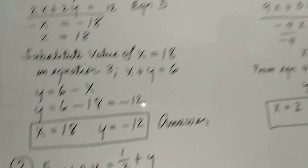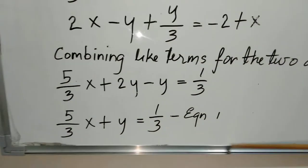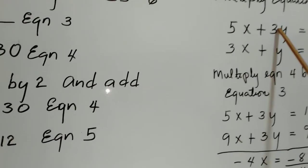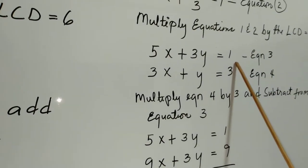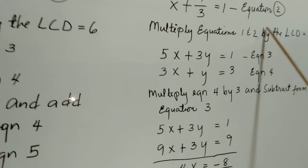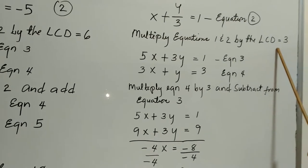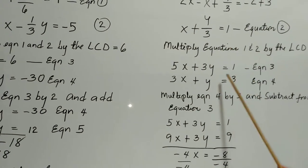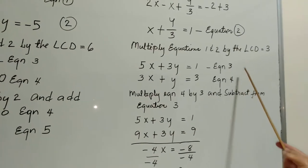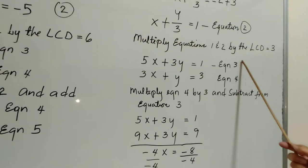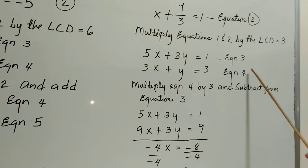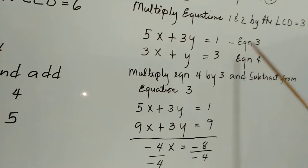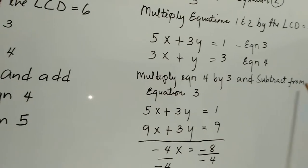We multiply both equations by the LCD of 3. Multiplying equation 1 by 3 gives us 5x plus 3y equals 1 — this is equation 3. Multiplying equation 2 by 3 gives us 3x plus y equals 3 — this is equation 4. We then multiply equation 4 by 3 and subtract from equation 3.